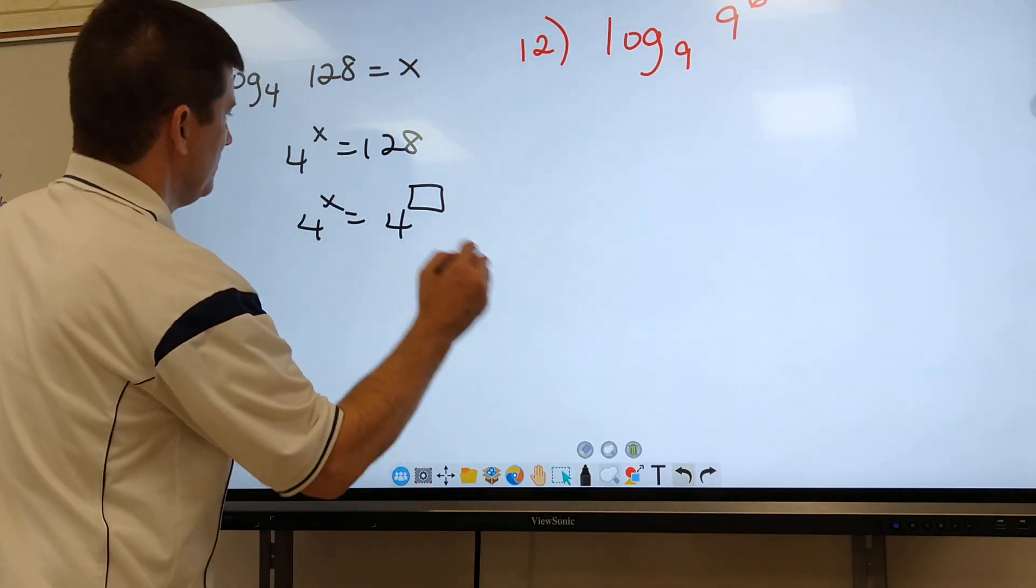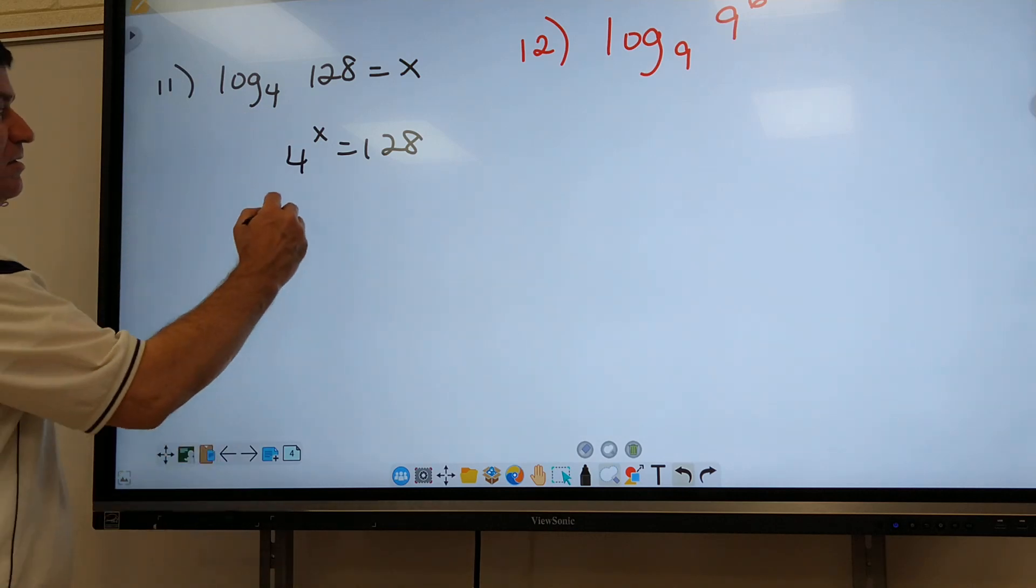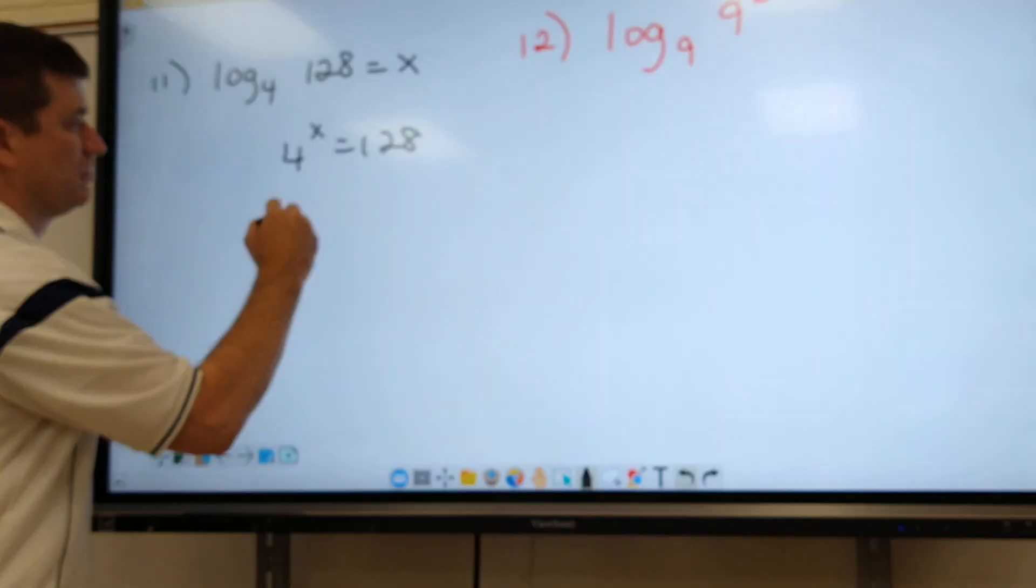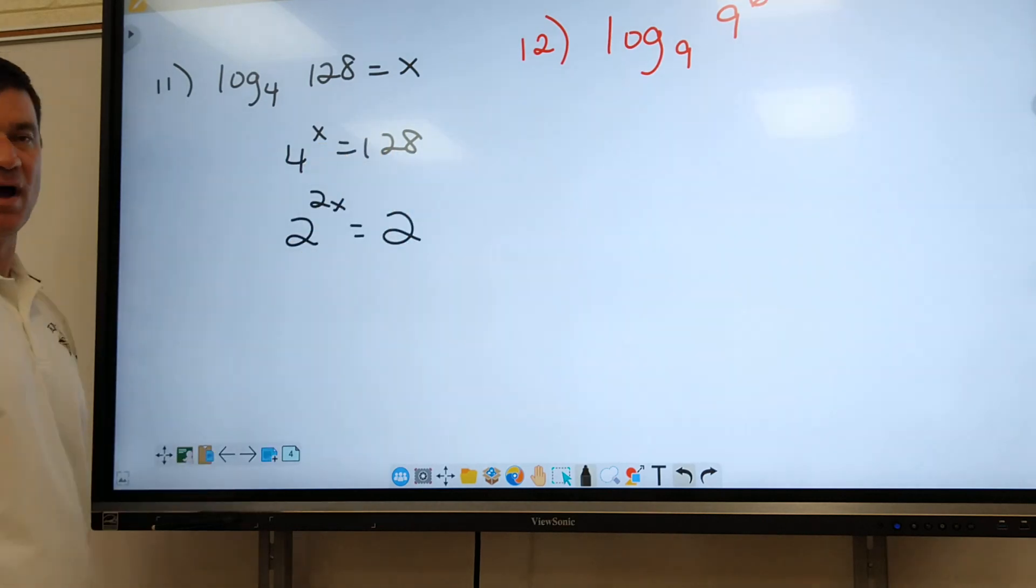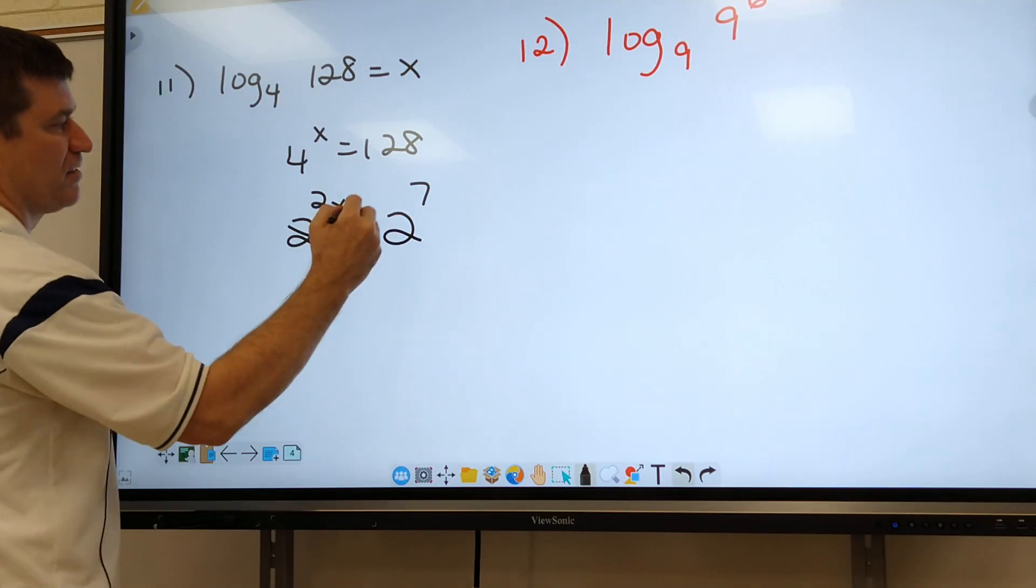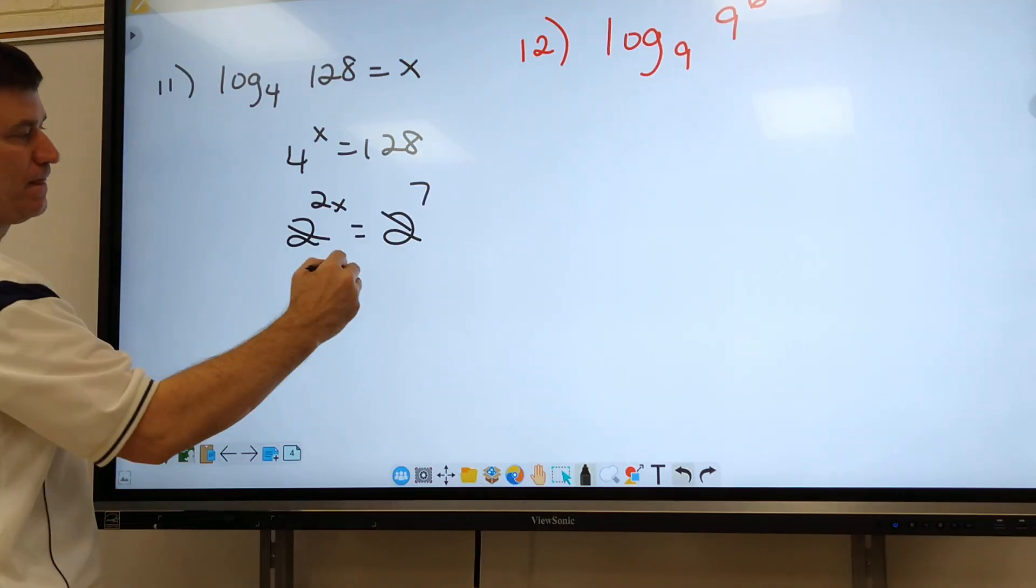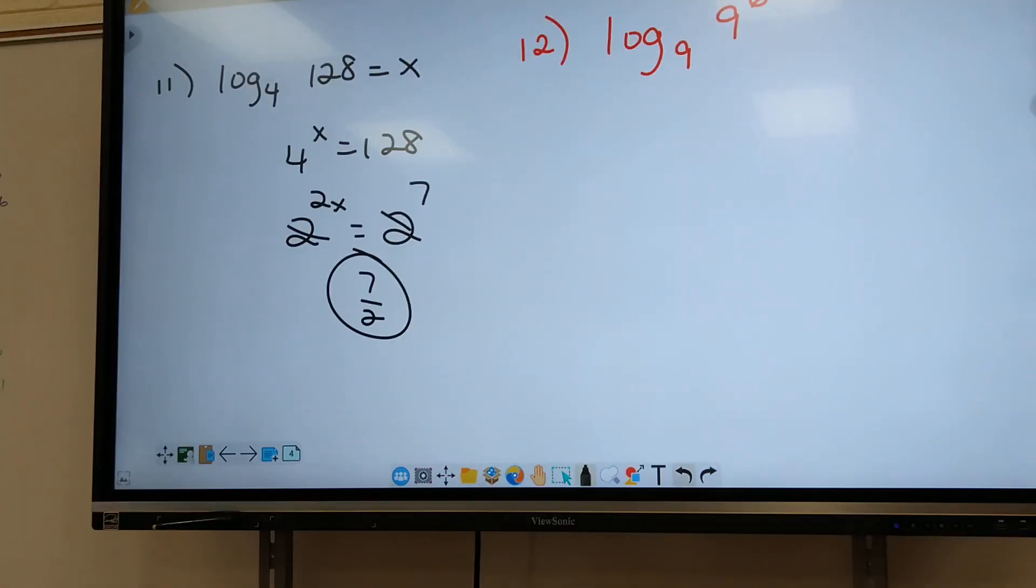So look for 128 and four up here. But look, we know what we can break four down into, or you should know. That's two squared. Which means this side's got to be two to some power. What is it? Seven. There it is. Two to the seventh. What's your answer? Seven over two. All right, we good? If y'all can do it in fewer steps, that's fine. Just show me one step.